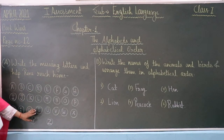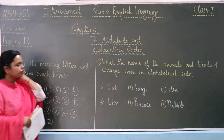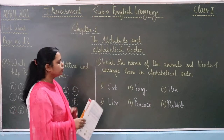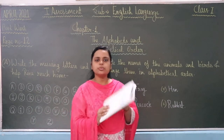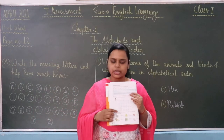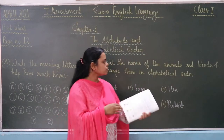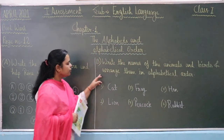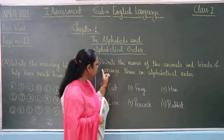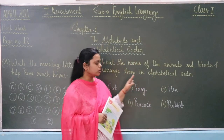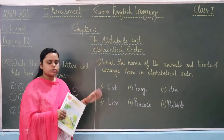So that was exercise number A — very simple, very easy. Now we are going to move forward with exercise B. Just below exercise A, you will find exercise B. Exercise B says: write the names of the animals and birds and arrange them in alphabetical order. So you just need to look at the pictures.